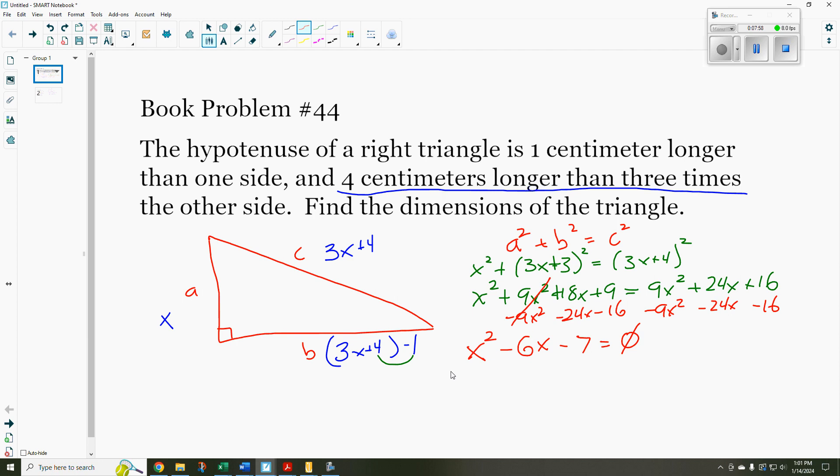So if I factor this, I want it in factored form, I get x minus 7 times x plus 1. So I can see that my zeros of this quadratic are going to be 7 and negative 1. So x is equal to 7 or x is equal to negative 1. But we have an issue here, because x is the side of a triangle, and I can't have a negative side. I can't have a negative distance. So x here is equal to 7.